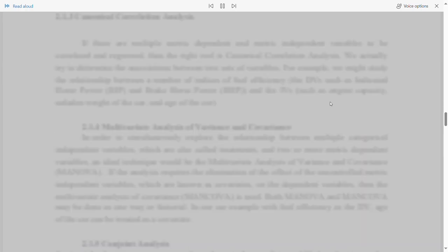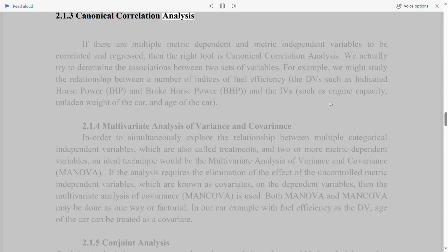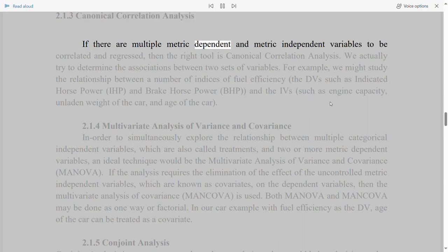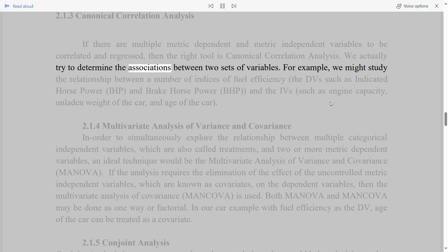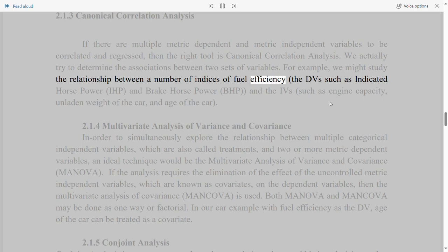2.1.3 Canonical correlation analysis. If there are multiple metric dependent and metric independent variables to be correlated and regressed, then the right tool is canonical correlation analysis. We actually try to determine the associations between two sets of variables. For example, we might study the relationship between a number of indices of fuel efficiency - the DVs such as indicated horsepower, IHP, and brake horsepower, BHP - and the IVs such as engine capacity, unladen weight of the car, and age of the car.